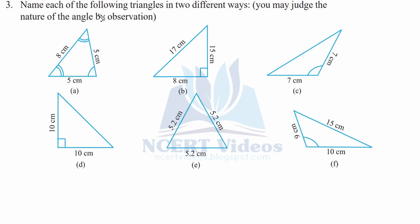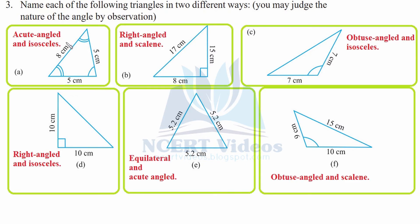Question three: Name each of the following triangles in two different ways — based on angles as well as sides. In the first case, two angles are the same, represented by two arcs. All angles are less than 90 degrees, so it is acute angled. Two sides are equal, therefore it is isosceles. So part a is acute angled and isosceles.